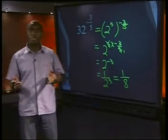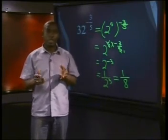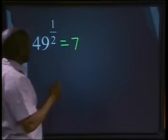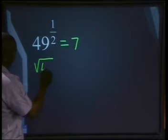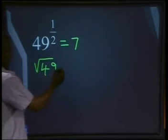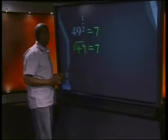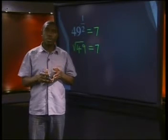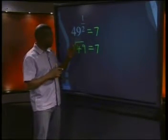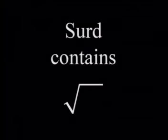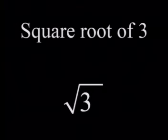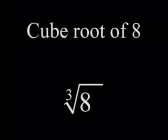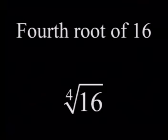All these expressions containing fractional exponents can also be written in another way. Look again at 49 to the power of 1 over 2 — we simplified that to 7. But what about the square root of 49? We said the square root of 49 will also be equals to 7. So we can say the square root of 49 is the same as 49 raised to the power of 1 over 2. We call this a surd — an expression containing a root sign. For example: the square root of 3, the cube root of 8, and the fourth root of 16.